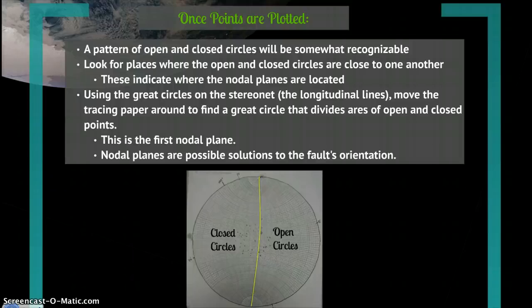Using the great circles on the stereonet, those longitudinal curves that travel north-south, move the tracing paper around to find a great circle that divides areas of open and closed points. This is your first nodal plane.